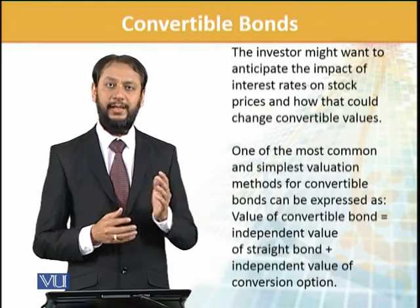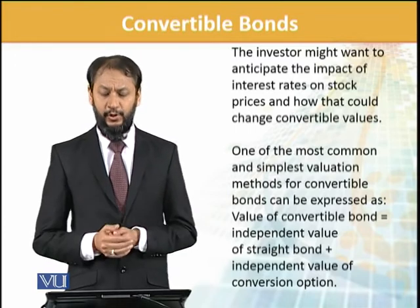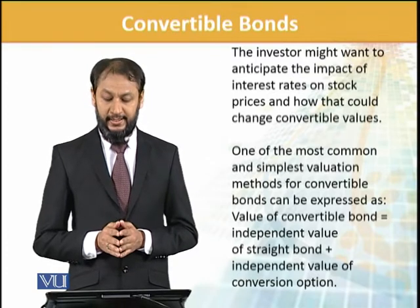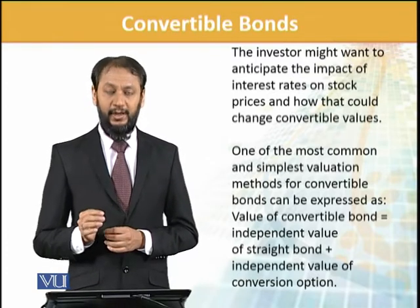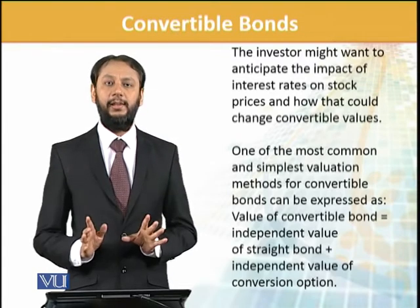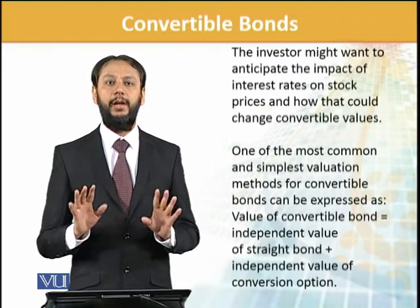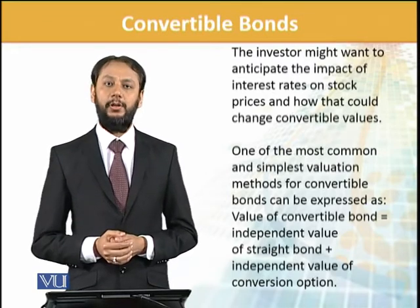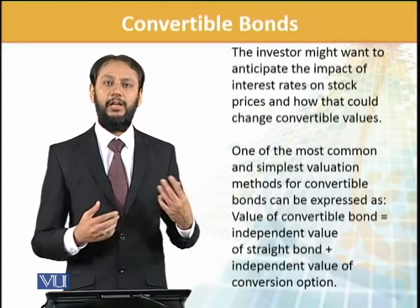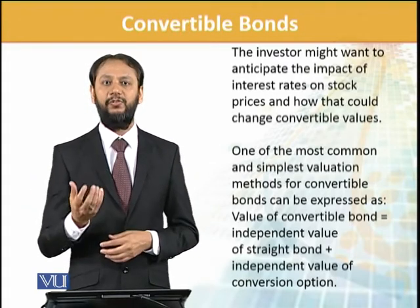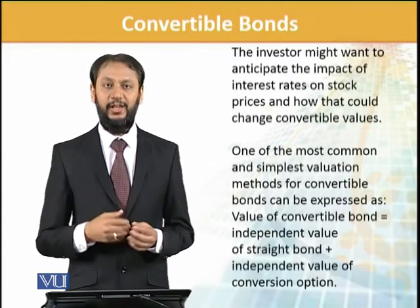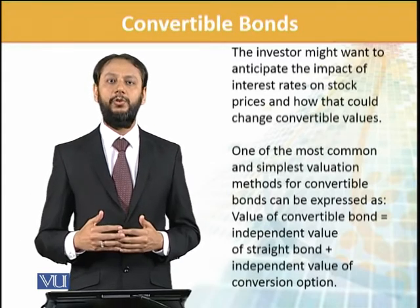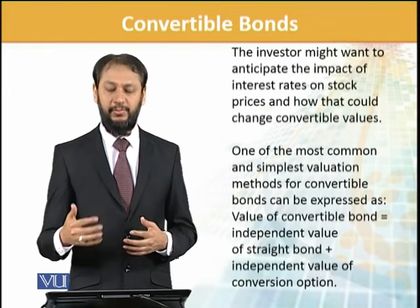One of the most common and simplest valuation methods for convertible bonds is: take the independent value of a straight bond — a simple traditional bond with no other impacts — and add the independent value of the conversion option, which can be positive or negative. Combining these two gives you the value of a convertible bond. This is the simplest approach; more complex combination methods also exist, but this is the most frequently used.